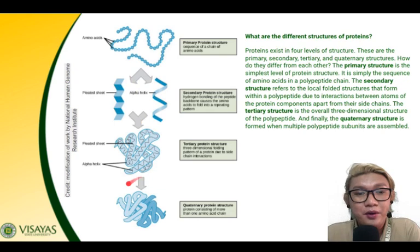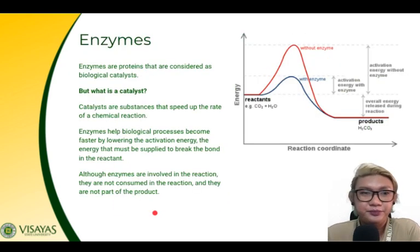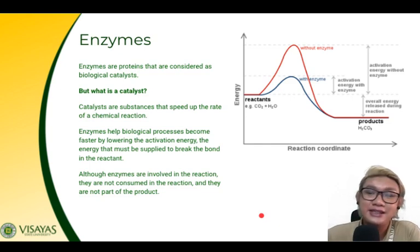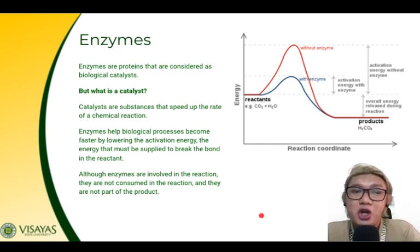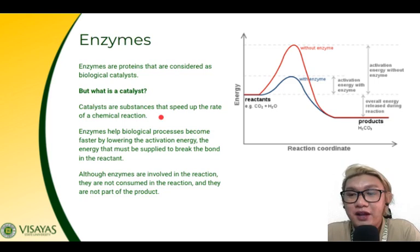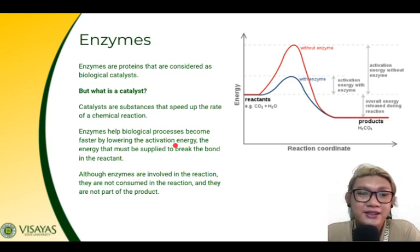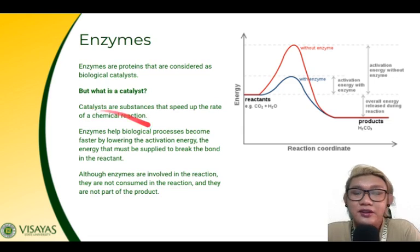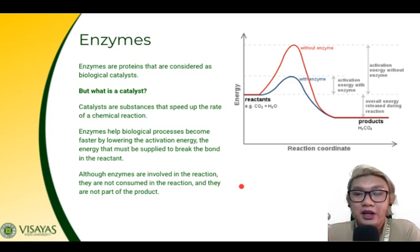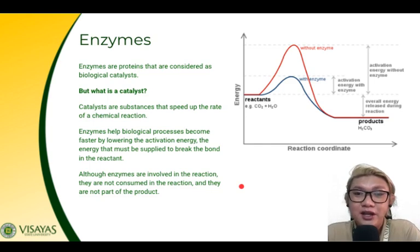If proteins are oligomeric, multiple tertiary structures aggregate to form the quaternary protein structure. Enzymes are proteins that function as biological catalysts. A catalyst is a substance that speeds up the rate of a chemical reaction. Enzymes help biological processes become faster by lowering the activation energy needed for a reaction to occur.